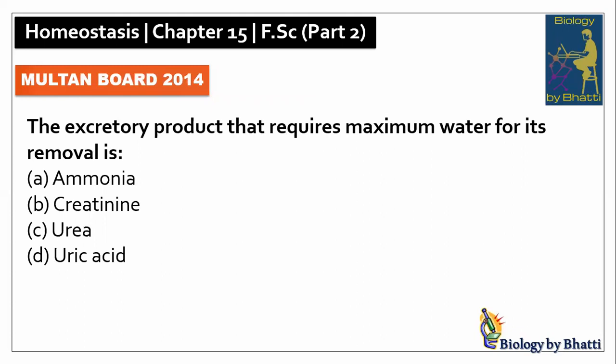Multan Board 2014: the excretory product that requires maximum water for its removal is ammonia. To remove 1 gram of ammonia you need 500 ml of water, for urea 50 ml per gram, and for uric acid just 1 ml per gram. So the maximum water requirement is for ammonia, and the answer was A option.